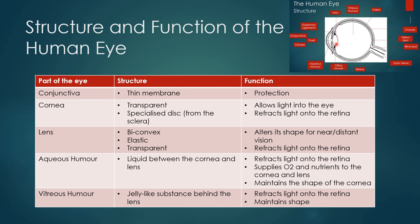The lens is biconvex, elastic, and transparent — BET. Because it is elastic and biconvex, it can alter its shape for near and distant vision. It is transparent, so it allows light through. If something is opaque, it can't allow light through. So the lens also refracts light onto the retina.